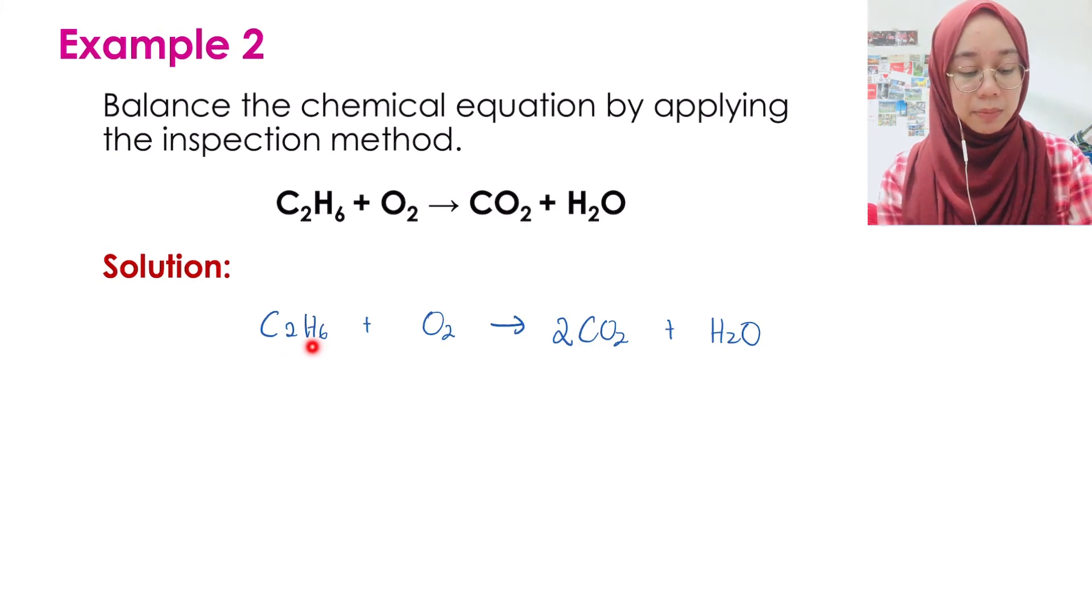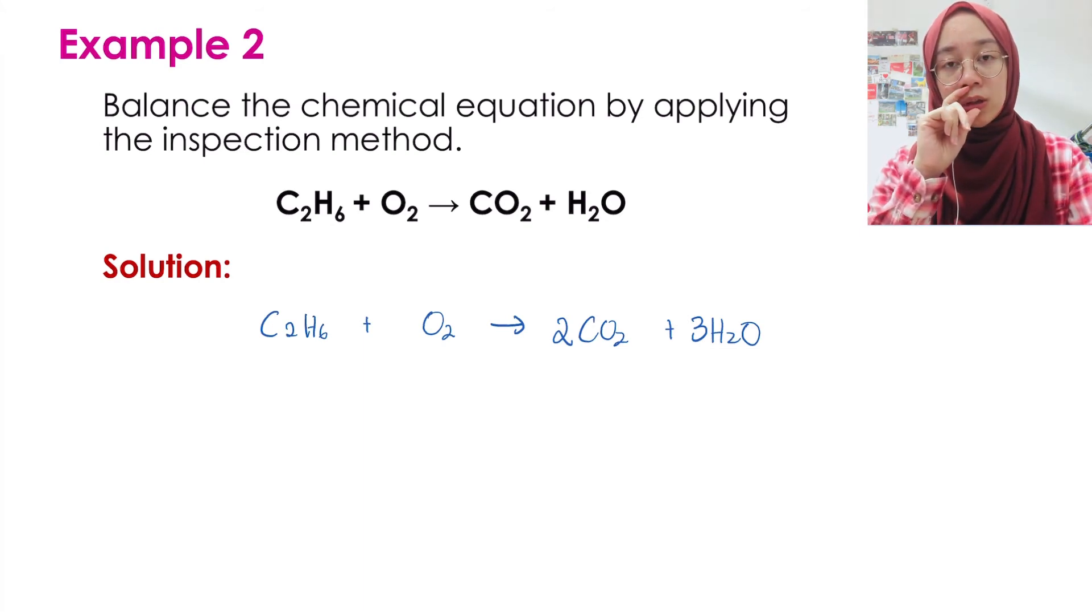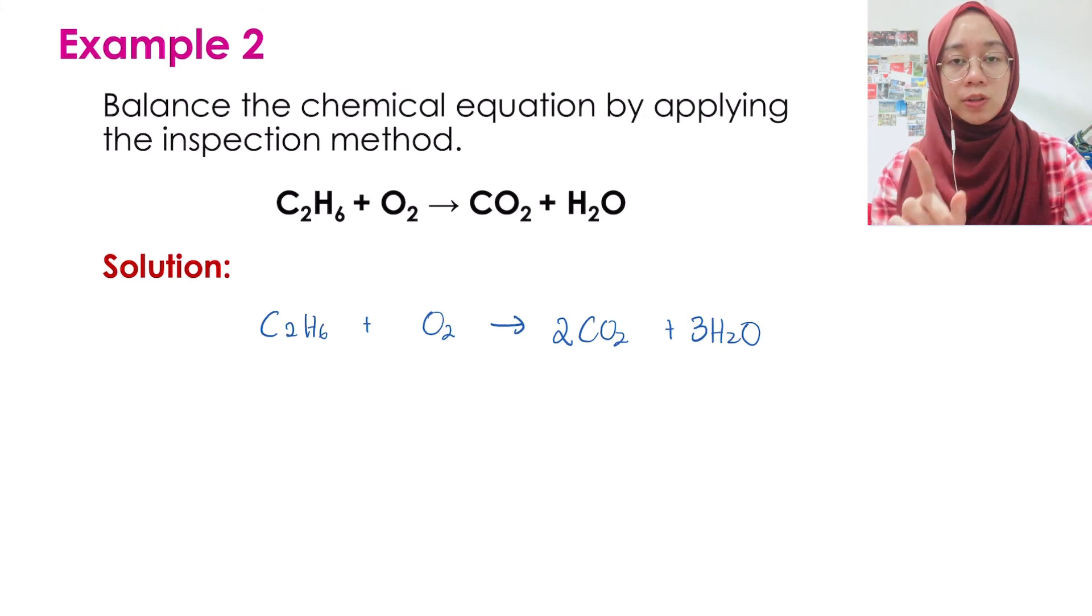Now you need to balance oxygen. Oxygen on the left you have two. However, on the right side, in both compounds we have oxygen. Always double check. You have two times two here, so four here. Here you have three. So you get four plus three, which is seven oxygen. When you have seven, seven is an odd number. However, your oxygen on the left side is in even number.